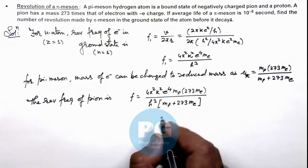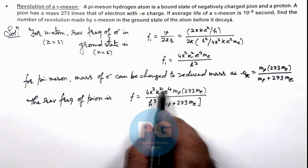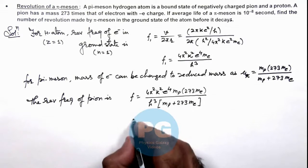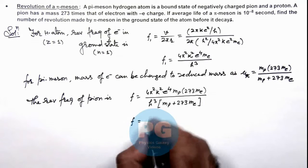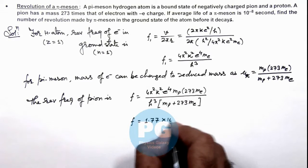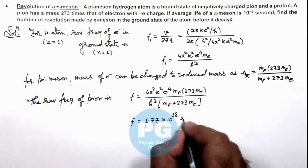I am leaving it as an exercise for you to substitute the values of all constants, then evaluate this result and verify the final revolution frequency of pion will get is 1.77 × 10^18 per second.